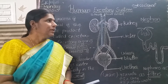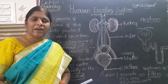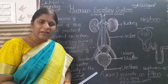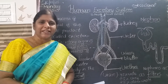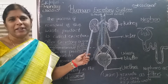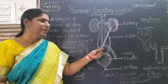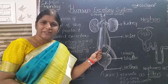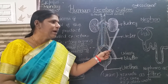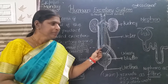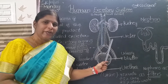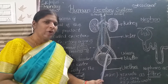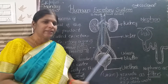What are the main organs present in the excretory system? Look at the board. The excretory system consists of a pair of kidneys, a pair of ureters, a urinary bladder, and urethra.